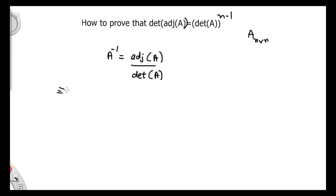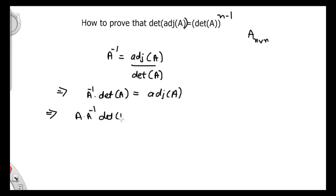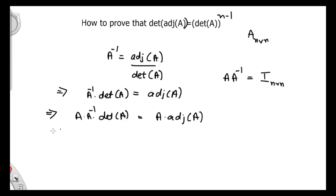Now from this property, I can shift this determinant A to the other side. So I can write A inverse times determinant of A is equal to adjoint of A. Now if I multiply both sides by matrix A, it would give us A times adjoint of matrix A. We know that A times A inverse is equal to the identity matrix of the same order as A, so order n cross n. So I can write: identity matrix of order n cross n times determinant of A, equal to A dot adjoint of matrix A.